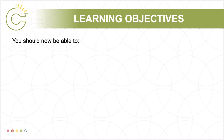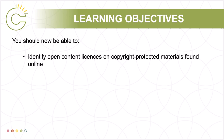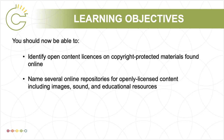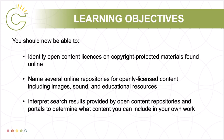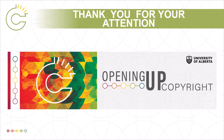You should now be able to identify open content licenses on copyrighted materials found online, name several online repositories for openly licensed content including images, sound, and educational resources, and interpret search results provided by open content repositories and portals to determine what content you can include in your own work. This has been the University of Alberta's Opening Up Copyright module on finding open and Creative Commons content. Thank you for your attention.